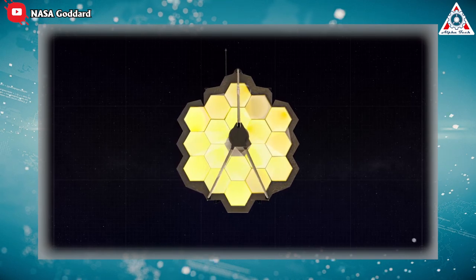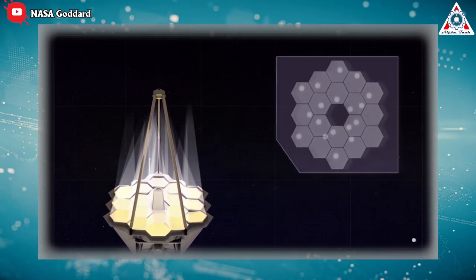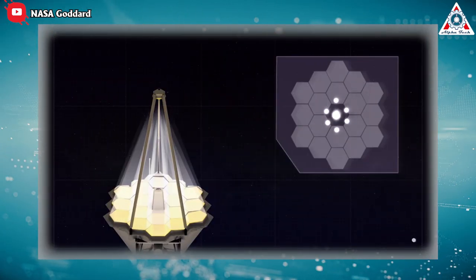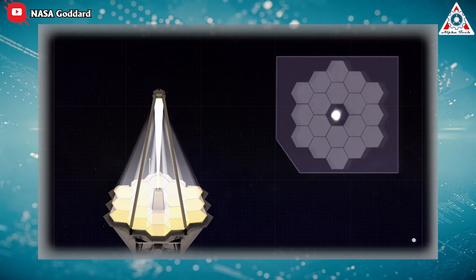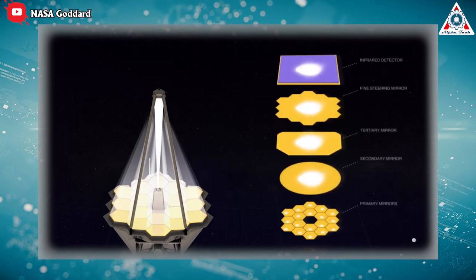Afterward, they will move on to segment alignment, a stage where each mirror segment is brought in and out of focus to produce 18 in-focus views. Then, they can move on to a phase called image stacking where each segmented image comes together to produce a unified picture with all the light falling in one place.